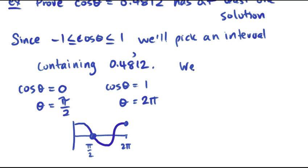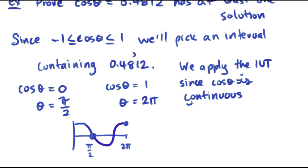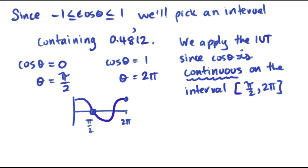So somewhere on that interval it's got to be 0.48. We apply the Intermediate Value Theorem since cos θ is continuous, that's the first part of the IVT that we must show, and it's continuous on the interval, it's always continuous but specifically on our interval which is π/2 to 2π. And cos(π/2) does not equal cos(2π), this one's 0 and this one's 1, just in case you forgot.